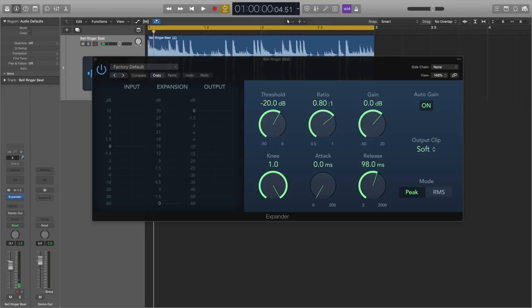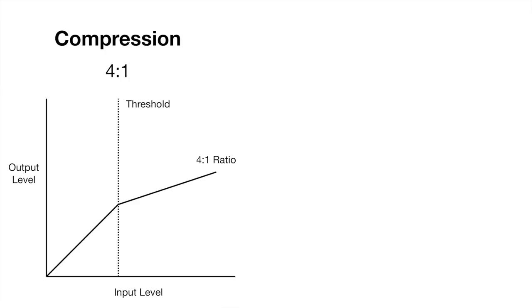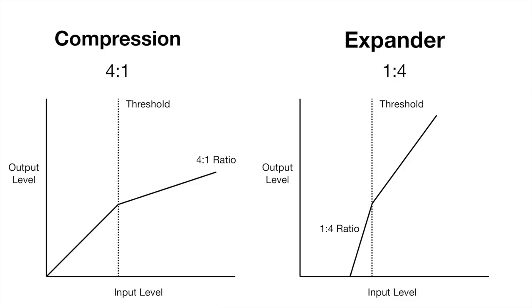The thing that is different with an expander is the ratio — it's basically the reverse of compression. On a compressor, a typical ratio will be 4:1, which means that for every four decibels the signal reaches above the threshold, the compressor will increase the output by one decibel. On an expander, you're more likely to see a ratio of 1:4, which means that every signal that is one decibel above the threshold will be amplified to four decibels above the threshold.